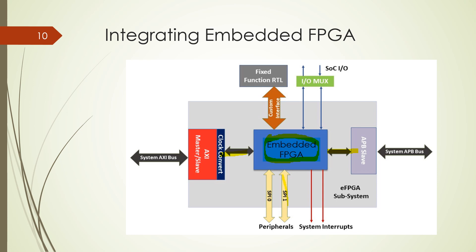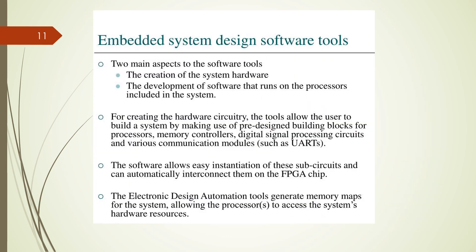The embedded system design has two main aspects: hardware and software. These two are combined to form the whole system. We create the system hardware and develop the software to run on the processor. The hardware circuit makes use of the processor, memory, and all required communication modules. The software allows easy instantiation of these sub-circuits.